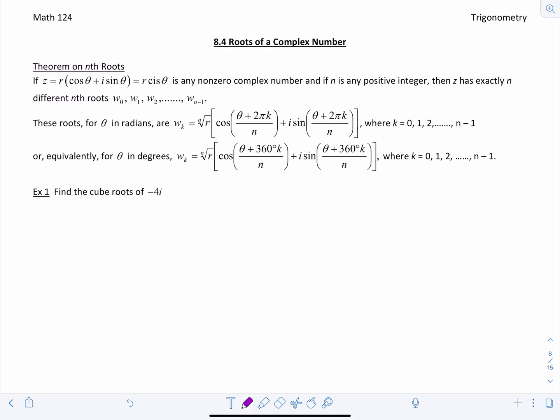So k starts at zero and goes up to n minus 1. And then in degrees it would be the same idea but you would have theta divided by n plus 360 k divided by n. I'll work through two examples and you'll see it's not too crazy as long as you just memorize the process or the rule.